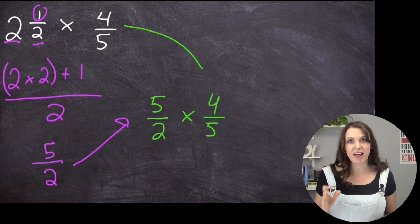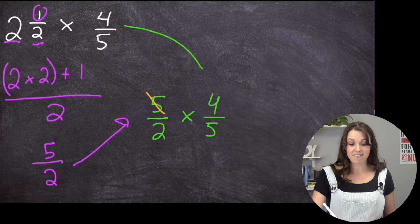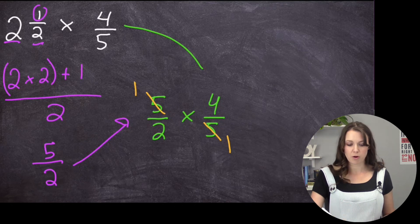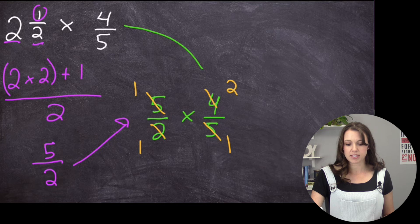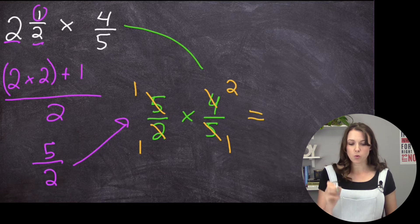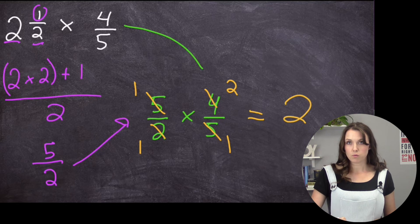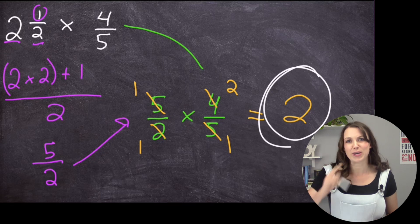and then I'm going to take my 4/5 times 4/5, and I'm going to multiply it across. But before I do my multiplying, let's see if we can do any cross-canceling. So 5 and 5, right? 5 goes into 5 one time. And 2 and 4, 2 goes into both of them. 2 goes into 2 one time. 2 goes into 4 two times. And now I multiply across. 1 times 2 is 2. And 1 times 1 is just 1. So that leaves my answer as 2.